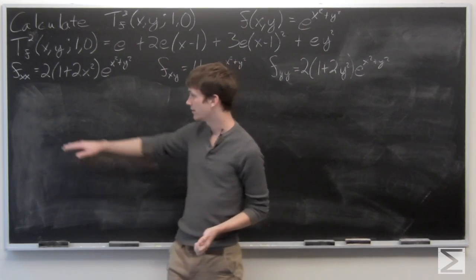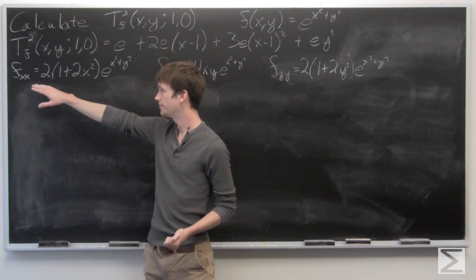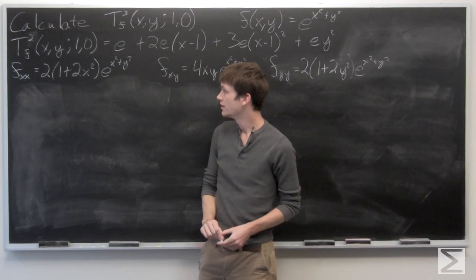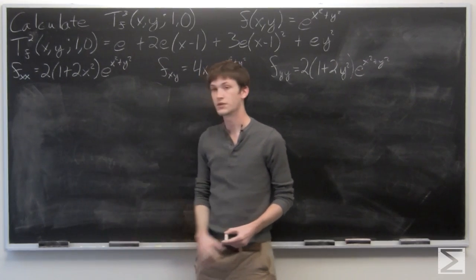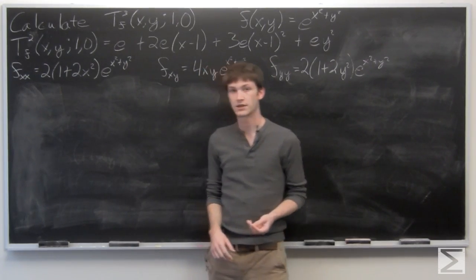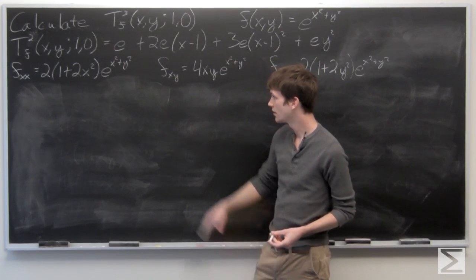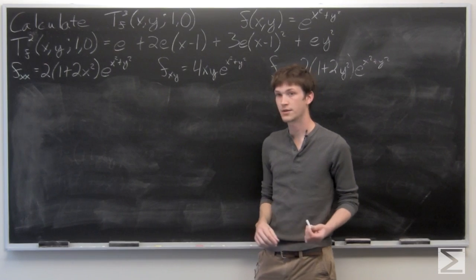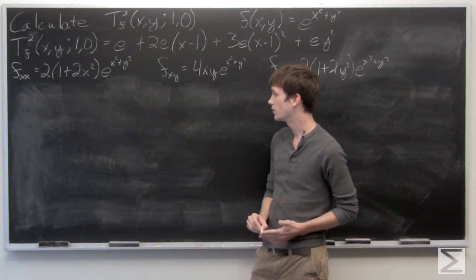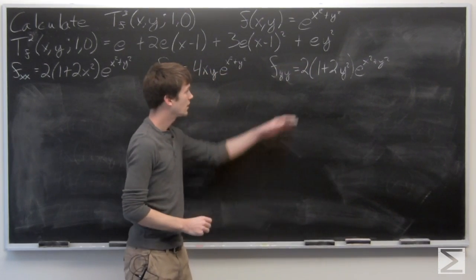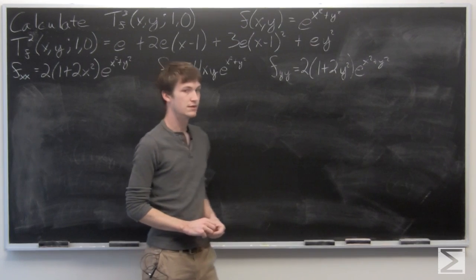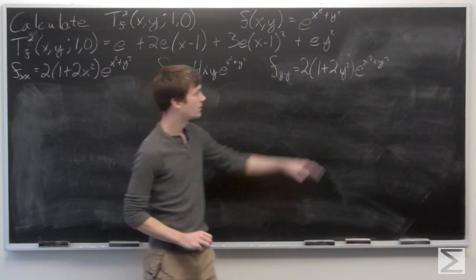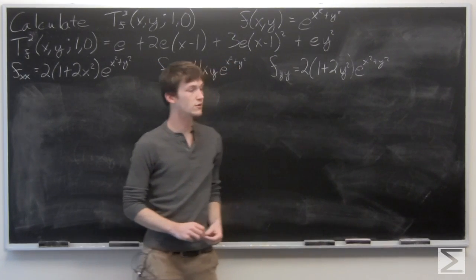From that same exercise, we determined that f_xx is equal to 2 times the quantity 1 plus 2x squared times e to the x squared plus y squared. f_xy is 4xy times e to the x squared plus y squared. And f_yy is equal to 2 times the quantity 1 plus 2y squared times e to the x squared plus y squared.